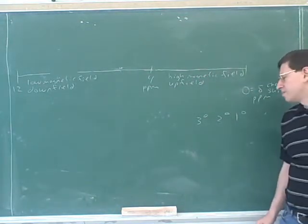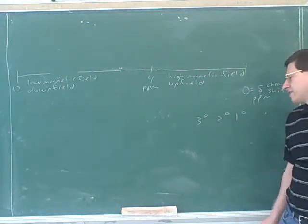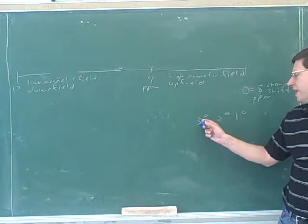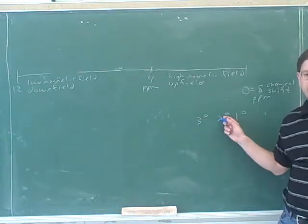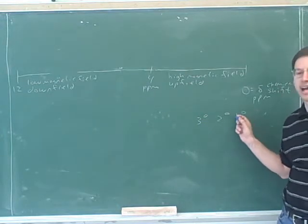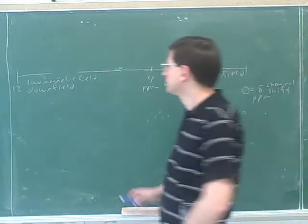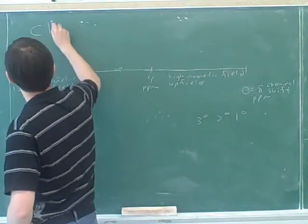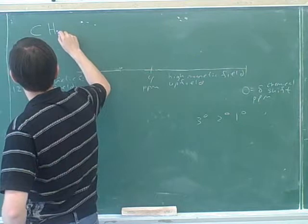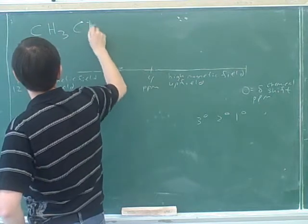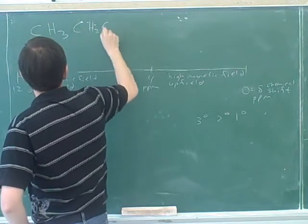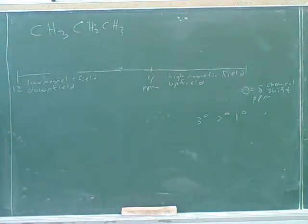We could write that like this: hydrogens on a tertiary carbon would be a little bit to the left compared to hydrogens on a secondary carbon, and that would be a little bit to the left compared to hydrogens on a primary carbon. So more substituted carbons tend to be downfield, which we know means to the left.